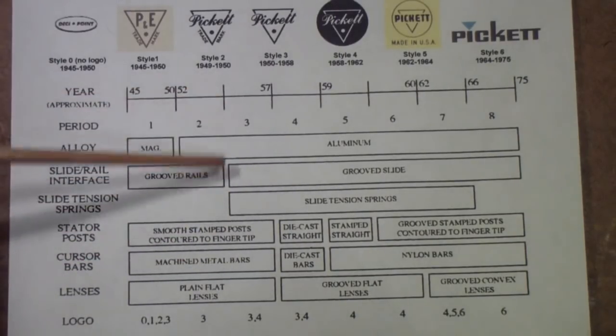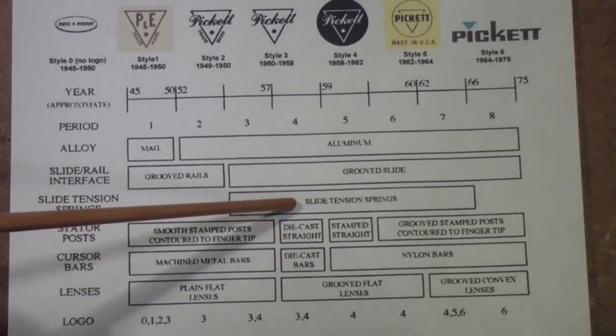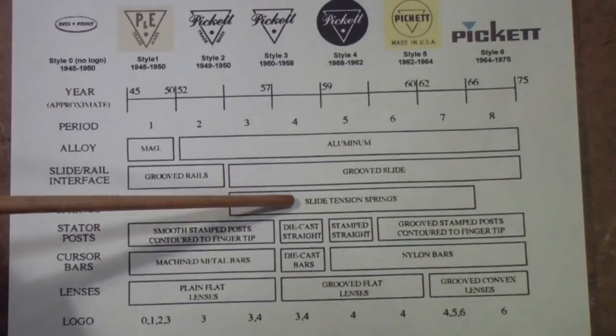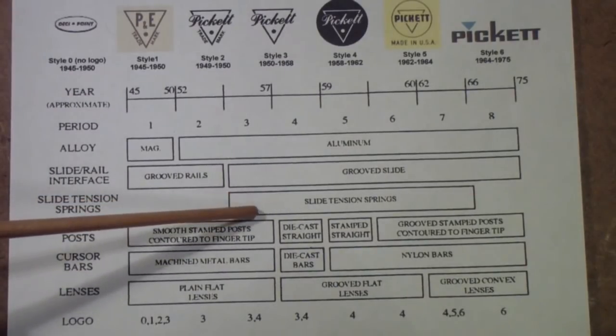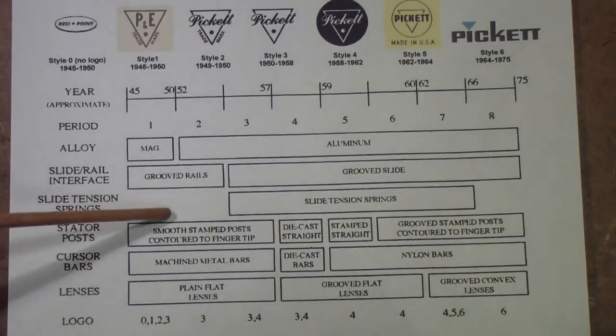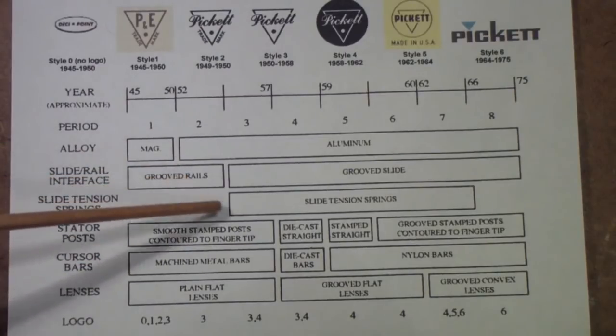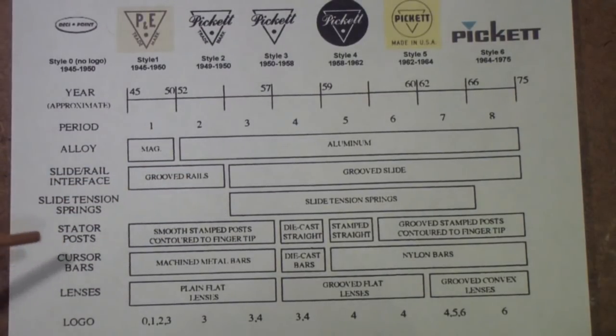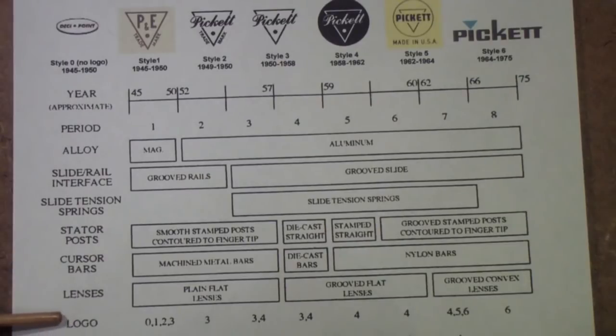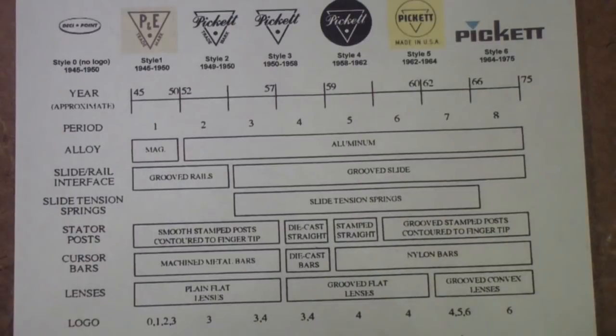In about 1953 or so, they began using tension springs in the slides to keep the slide from falling out the end. That was a common complaint with these early slide rules: if you had them loose enough to slide easily, then the slide would sometimes just fall out the end. So let's take a look at a list of the rules we're going to talk about.